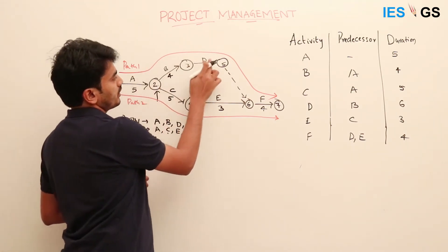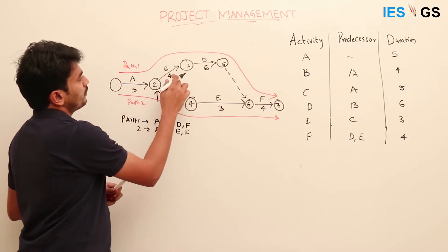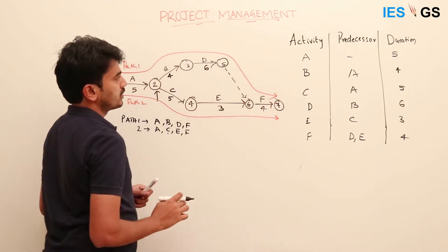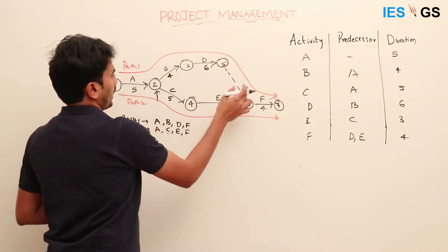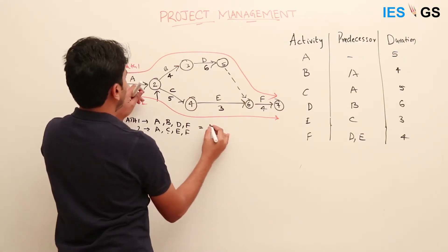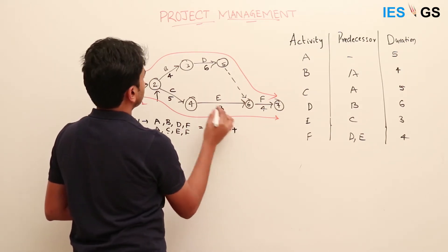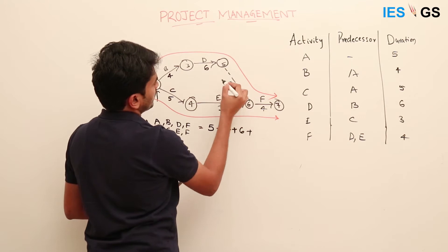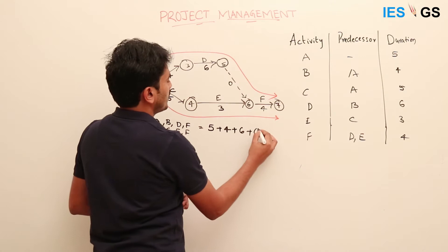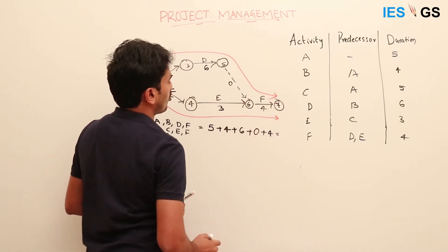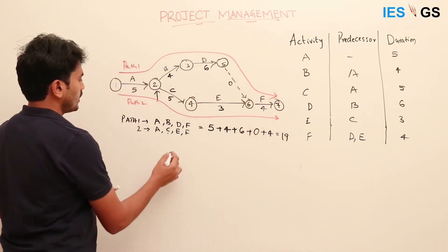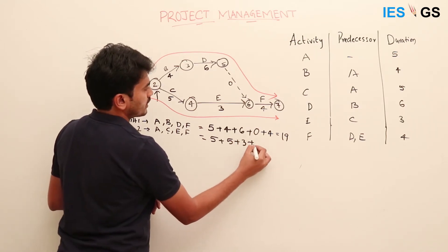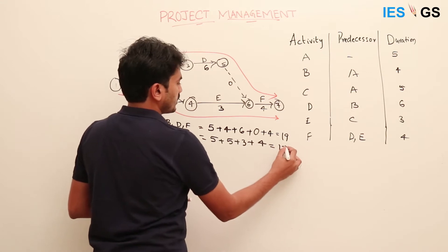Activity A is common to both paths and takes five days. B and D are parallel to C and E. Calculating Path 1: A takes five days, B takes four days, D takes six days, the dummy activity takes zero days, and F takes four days — giving a total of 19 days. Path 2: A takes five days, C takes five days, E takes three days, and F takes four days — giving a total of 17 days.